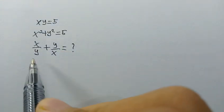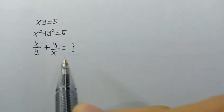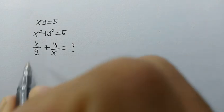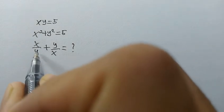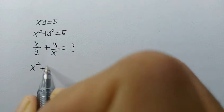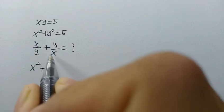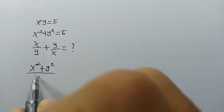First, we will equalize the denominators. x times x is equal to x squared, y times y is equal to y squared, and y times x is equal to xy.